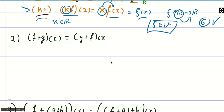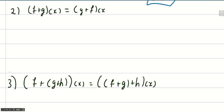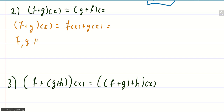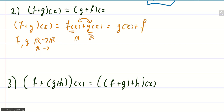The next axiom is commutativity of the sum operation. So f plus g applied to x, by definition, is f of x plus g of x. Since f and g map the reals to the reals, evaluating at any x gives real numbers, and real numbers commute. So we obtain g of x plus f of x, which is just the definition of g plus f applied to x. Therefore the functions commute.